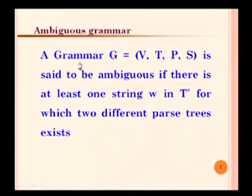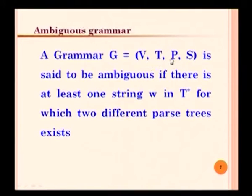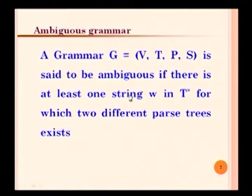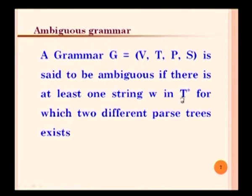A grammar G — with components V (variable set), terminal set, productions, and start symbol — is said to be ambiguous if there is at least one string W in the closure of the terminal set for which there are two different parse trees. We do not require every string to have more than one parse tree; if even one such string exists, the grammar is immediately called ambiguous.